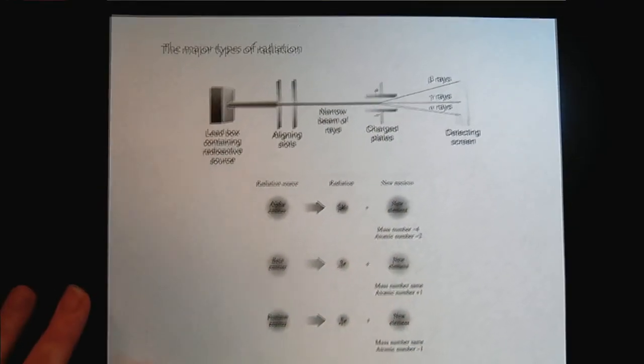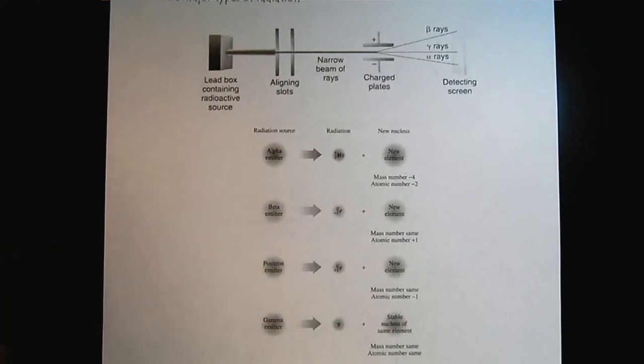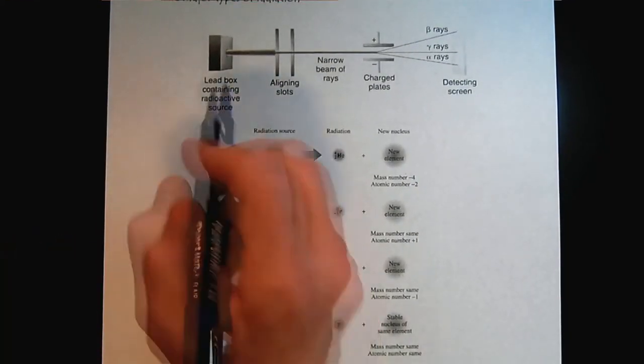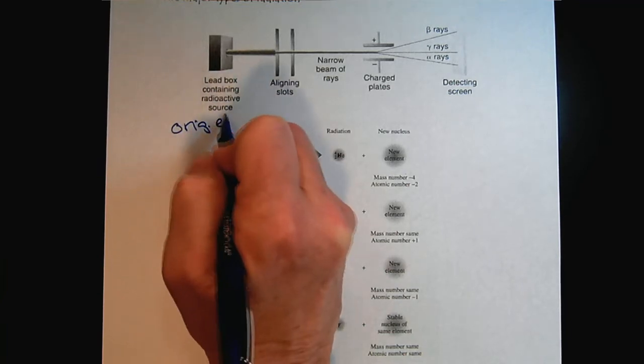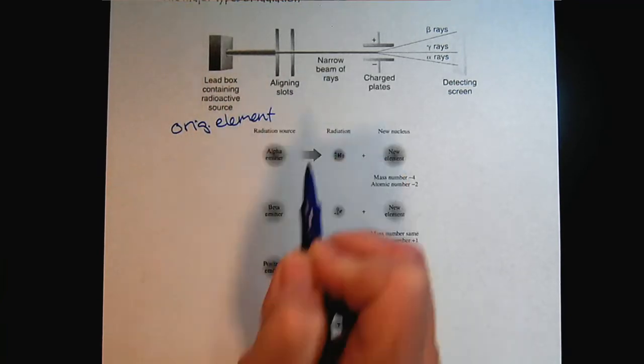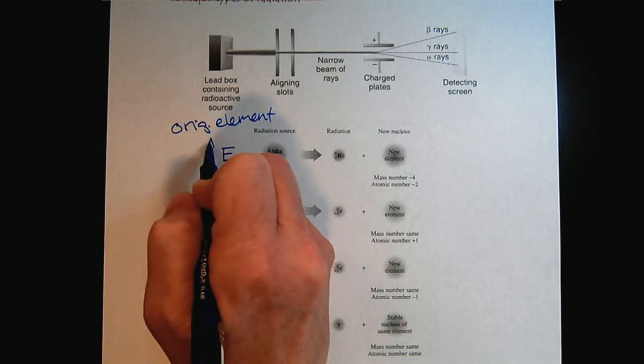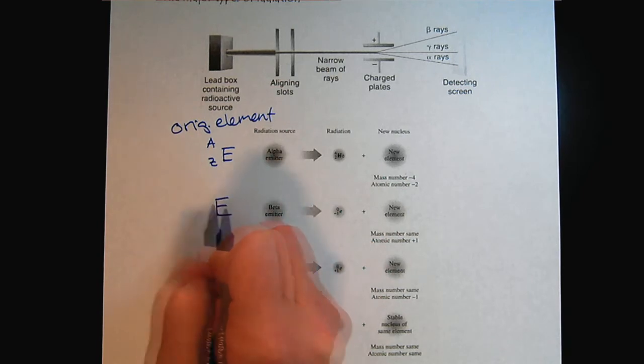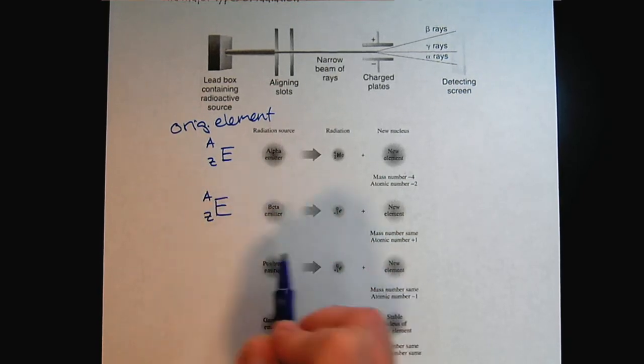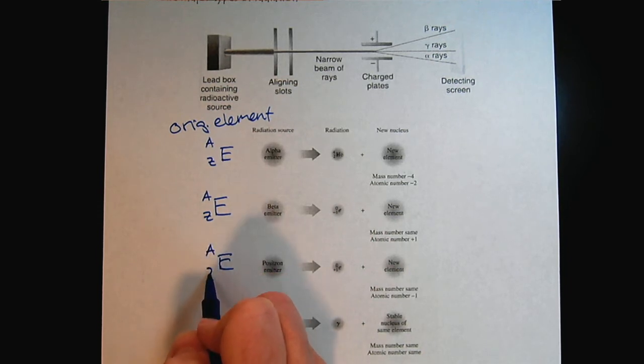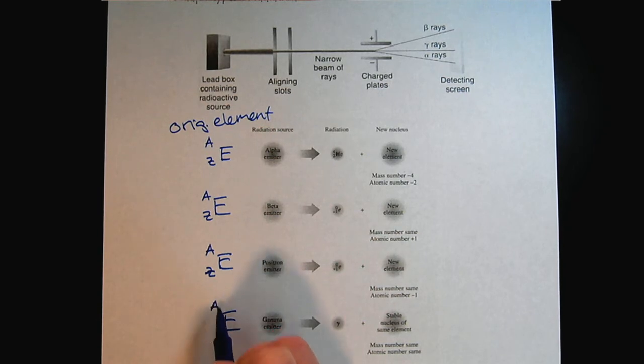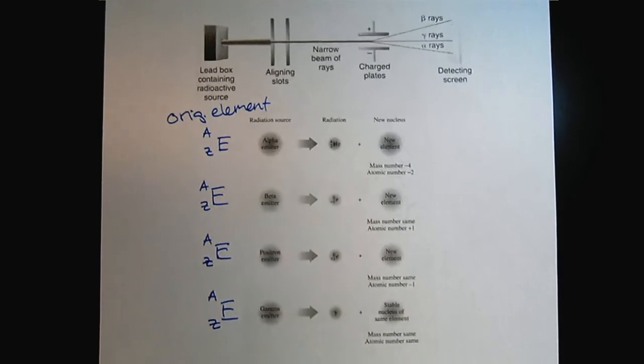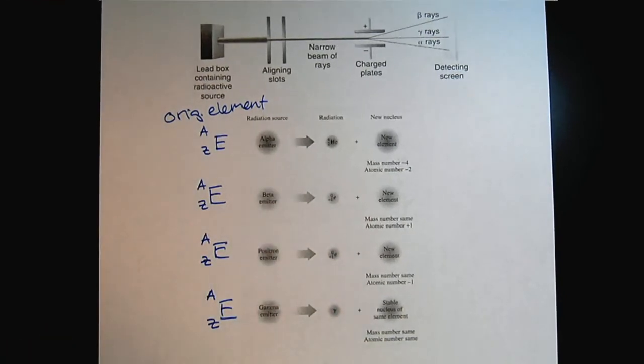So here's a table that summarizes. So we'll start here, and this will be our original element. And so it could be any element, so we'll just be generic here. So just for simplicity, I'll use the same symbols. It would be pretty uncommon that a single element or isotope would have all of these different forms of decay, but it will, I think, be instructive.